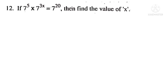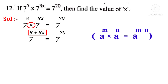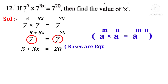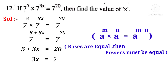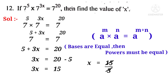Question 12: If 7 power 5 into 7 power 3x equals 7 power 20, find the value of x. Using the formula A power M into A power N equals A power M plus N, we get 7 power (5 + 3x) equals 7 power 20. Since bases are equal, 5 + 3x = 20, so 3x = 15, and x = 15/3 = 5.